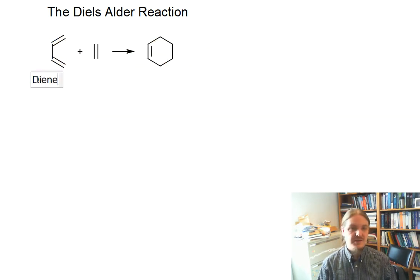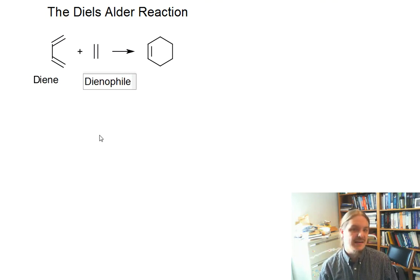The two components of a Diels-Alder reaction are a diene, and then the other piece is called a dienophile, something that likes to react with the diene.